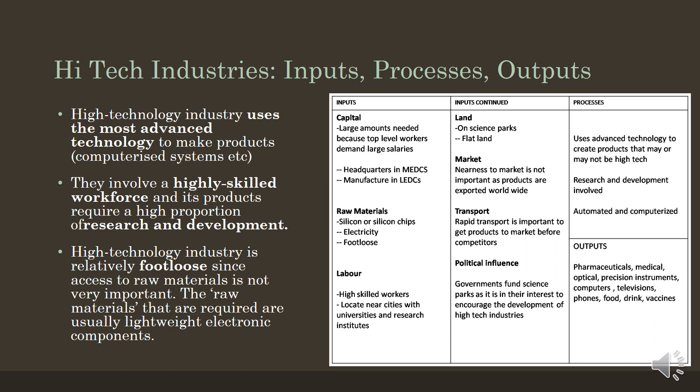High tech industries are normally put into the footloose group of industries because they do not require bulky raw materials. They use small, light component parts. They have products which tend to be small and light. They use electricity as their power source, need a small skilled labour force, and are non-polluting, so can locate in or near residential areas. Footloose — they don't need a particular place to stay.